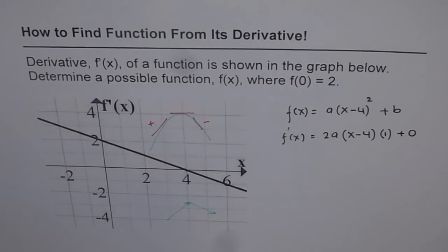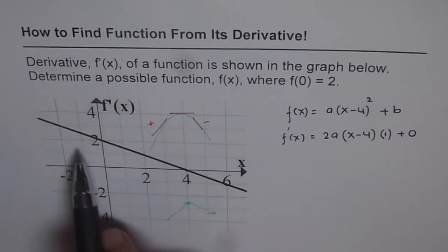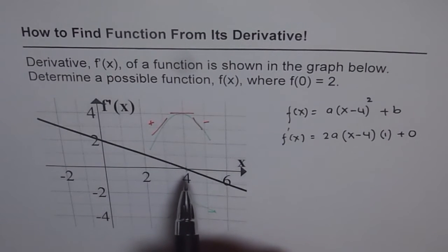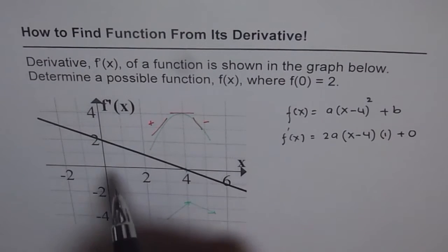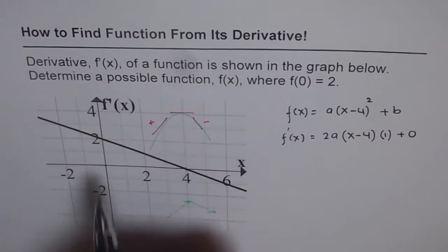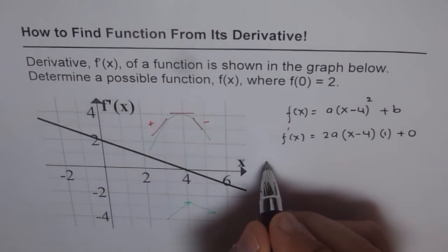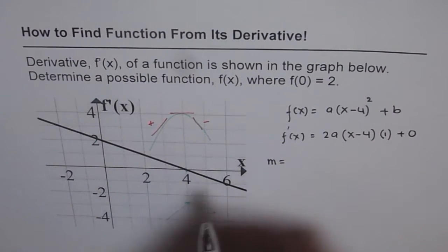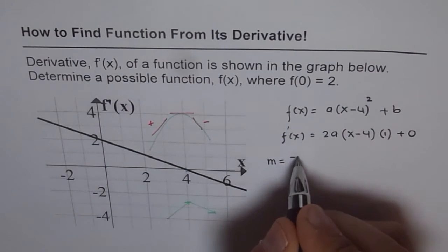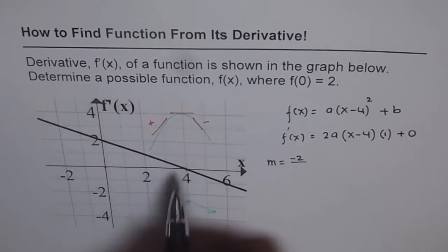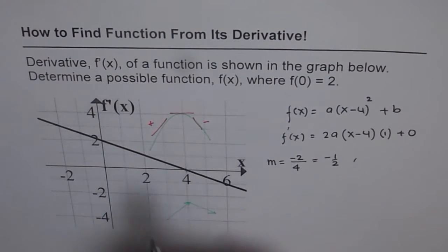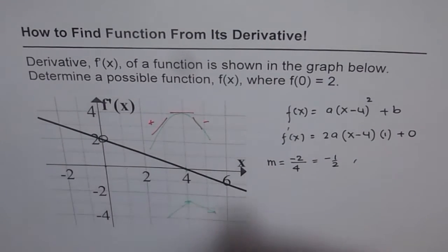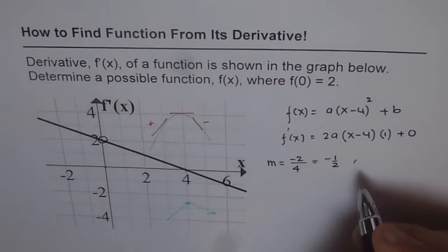Now we are already given derivative as a line. Can you find equation of this line? Yes, we can. What is the slope of this line? The slope of this line is y₂ minus y₁. That means it goes down by 2 units. So the slope, we can write equation of line as slope m is equal to 2 down, that means minus 2. And the x value is 1, 2, 3, 4—that's 4. That means slope is minus half. And also we know y intercept is 2 for the derivative.